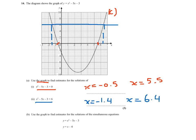For the third one, we have to estimate the solutions for the simultaneous equations. We have y equals the quadratic and y equals x minus 4. What we'll do is first draw y equals x minus 4, which is a line, and find where it meets up with the curve.